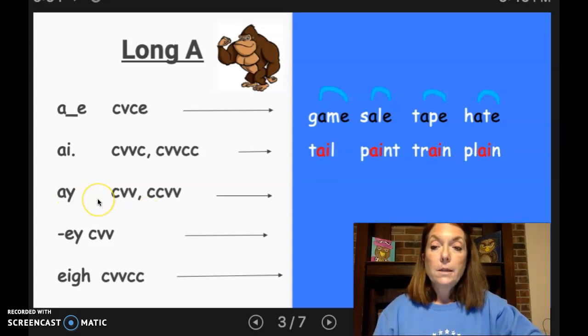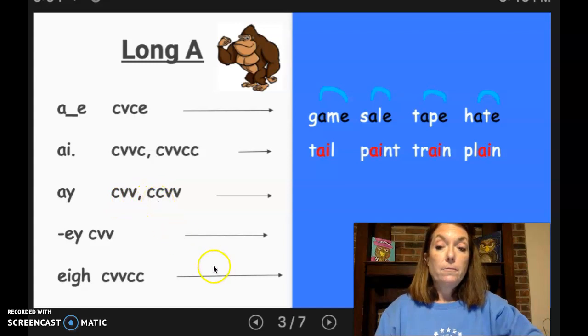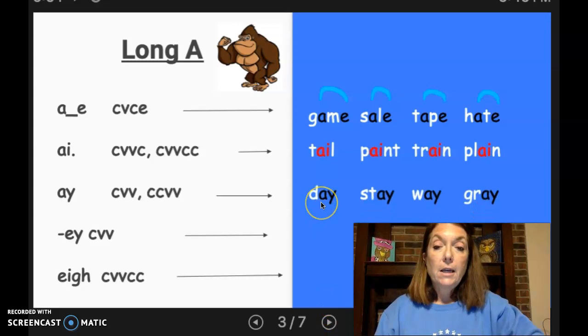AY is another way that we can spell the long A sound. And you will see that usually at the ending of a word. So we have consonant, vowel, vowel, or you might have two consonants followed by the AY. Let's look. We have day. And here's one that has two consonants, stay, way, and gray.